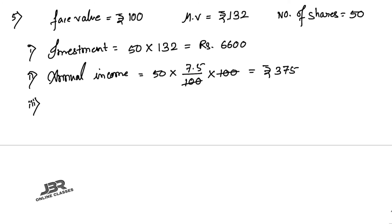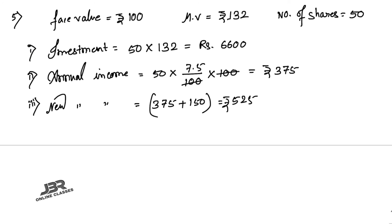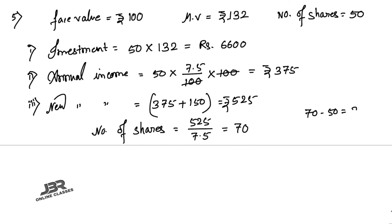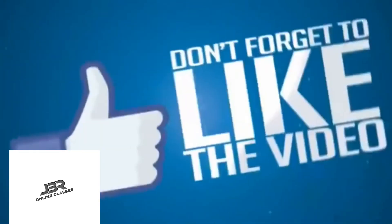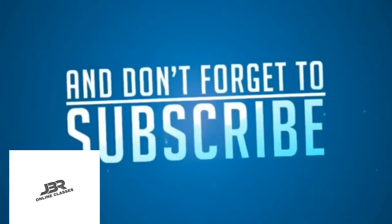Third, if he wants to increase his annual income by rupees 150, how many extra shares should he buy? The new annual income equals 375 plus 150, which is rupees 525. Number of shares for the new income equals 525 divided by 7.5, which is 70 shares. The previous number of shares was 50, so extra shares to be bought equals 70 minus 50, which is 20 extra shares.